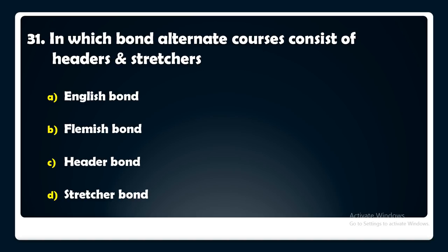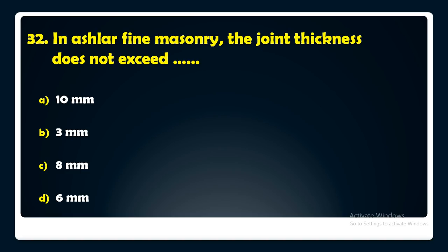In Ashlar fine masonry, the joint thickness does not exceed — 10 mm, 3 mm, 8 mm, or 6 mm? The answer is: in Ashlar fine masonry, the joint thickness does not exceed 3 mm.